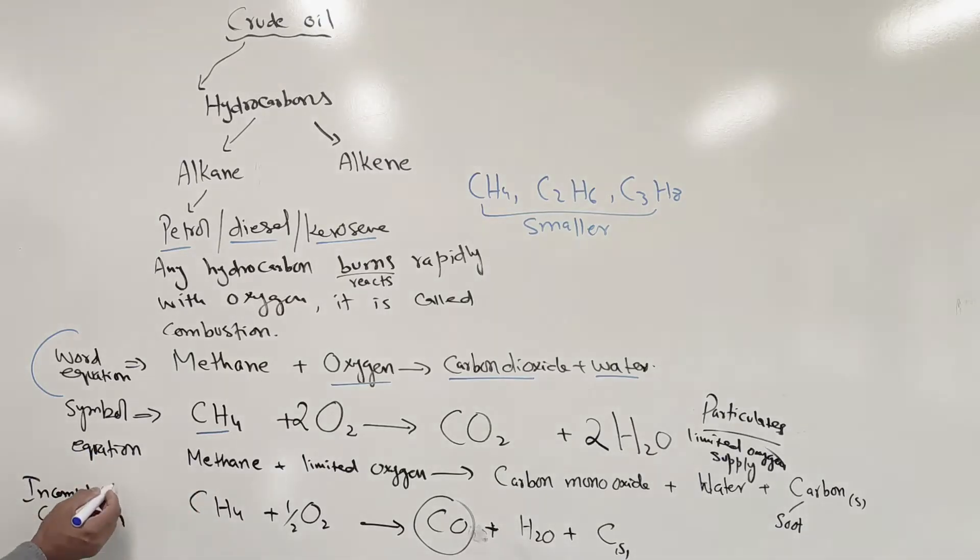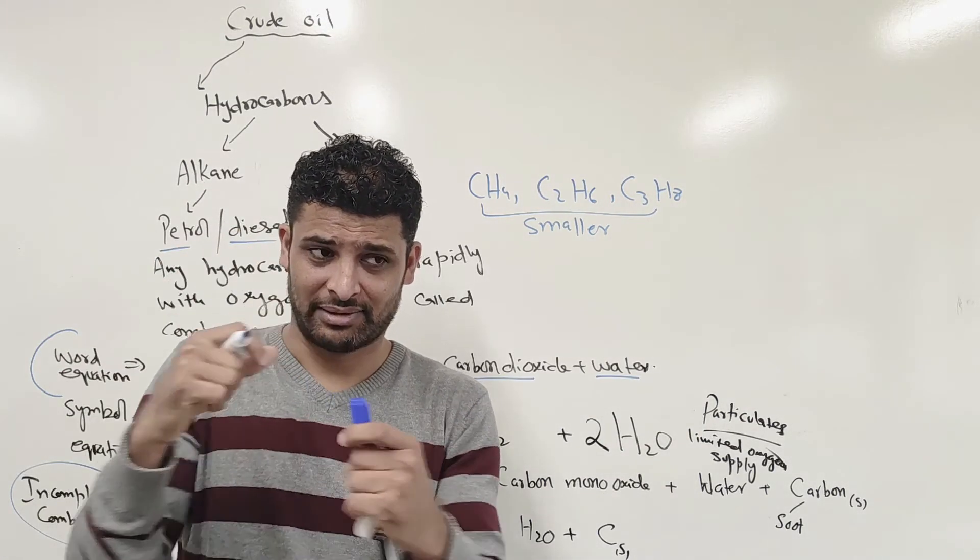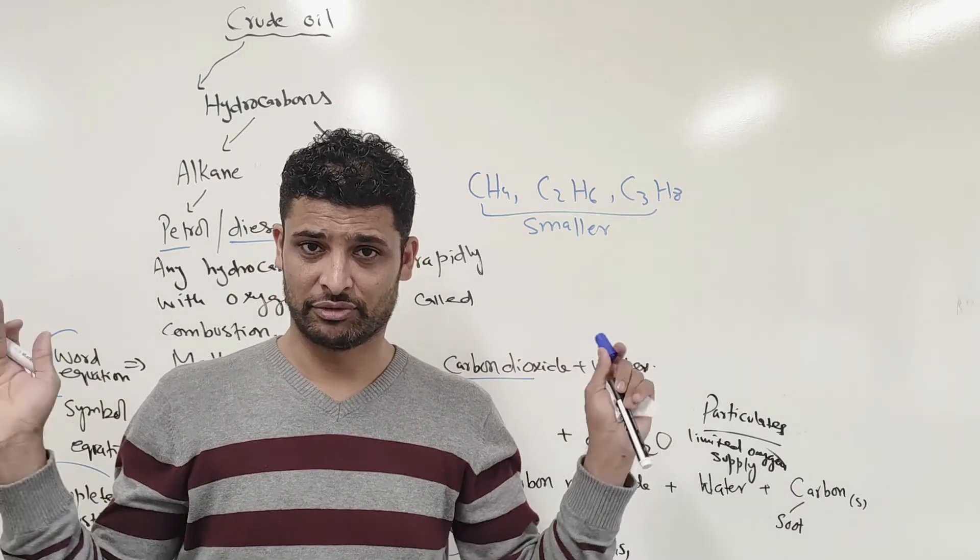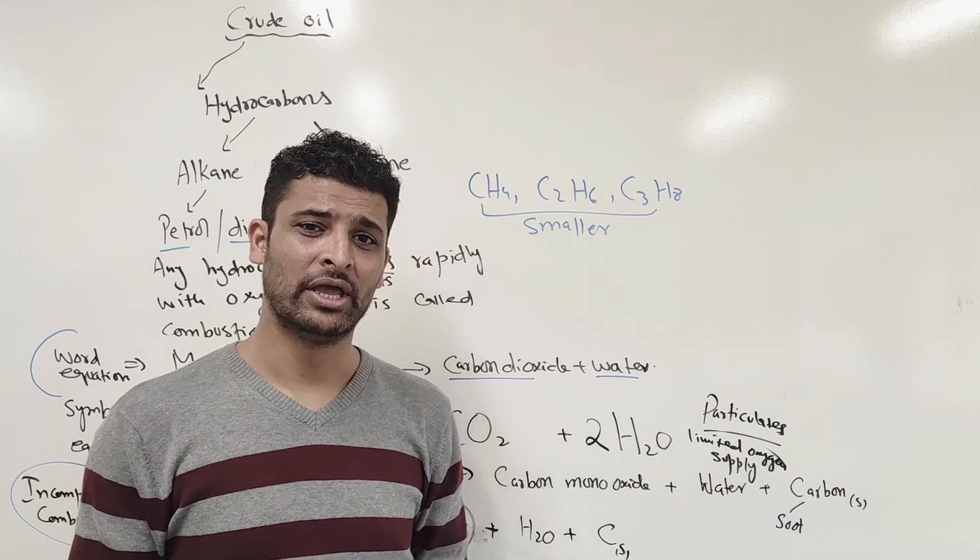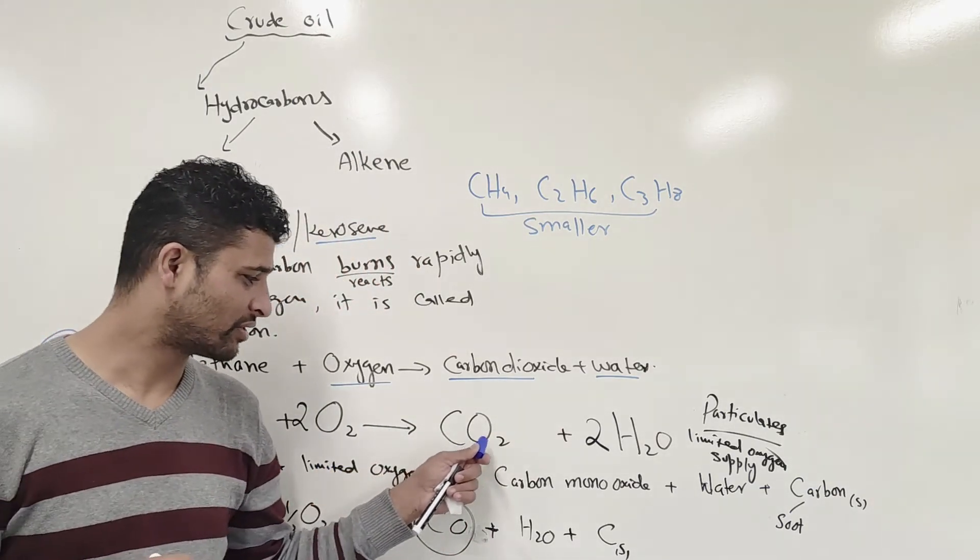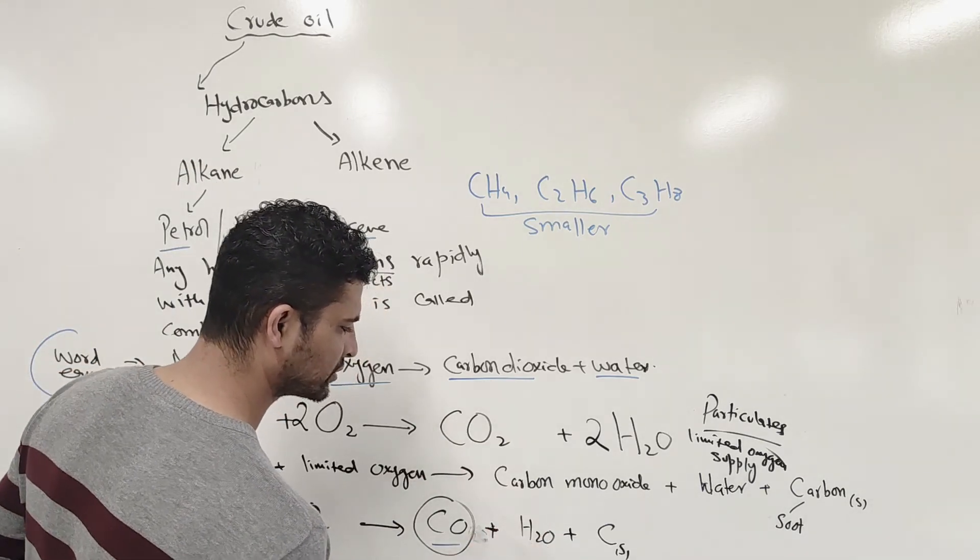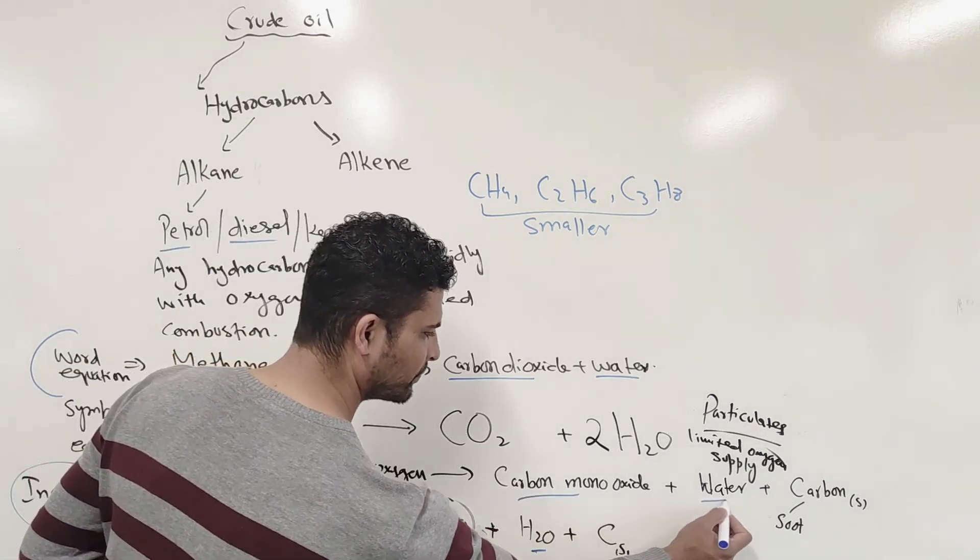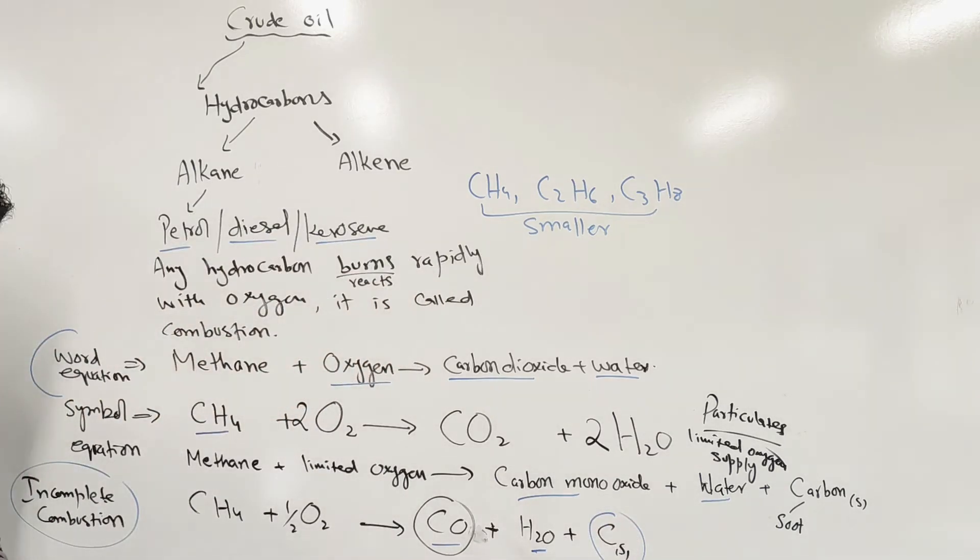Now we look at incomplete combustion. When you talk about incomplete combustion, that means where you're burning the hydrocarbon, there's not good supply of oxygen. Everything remains the same, but there's a slight change. Rather than producing carbon dioxide, you produce carbon monoxide. Water is still there, and you also produce carbon soot.